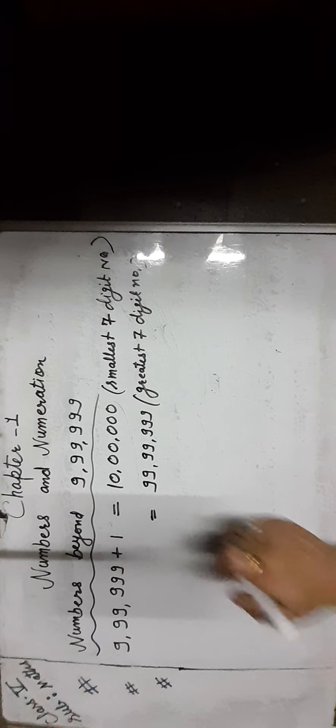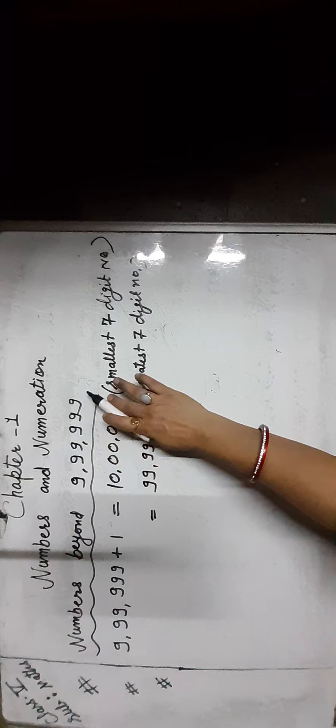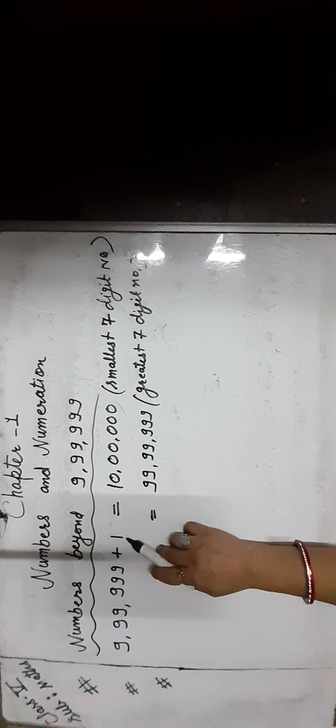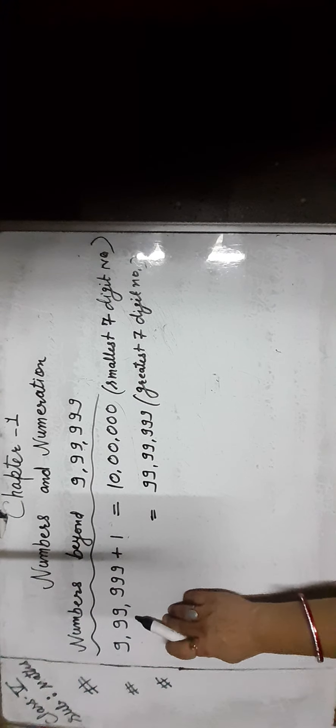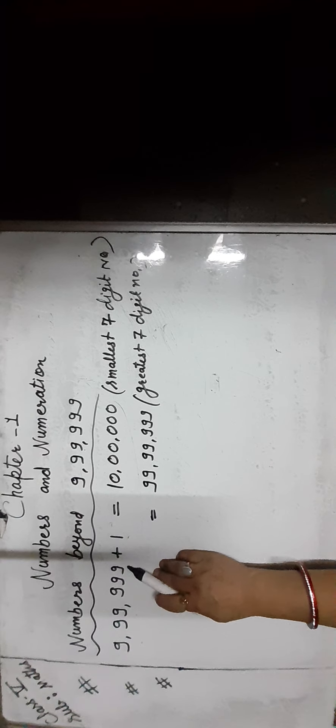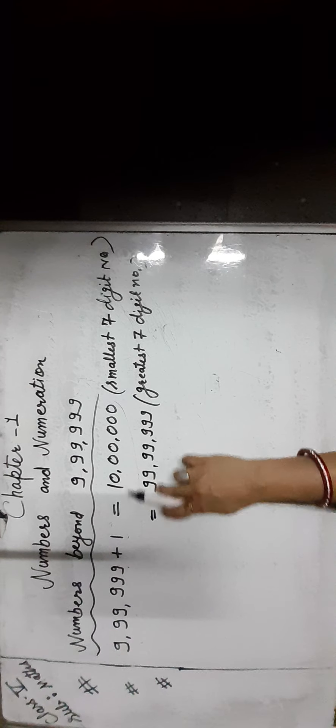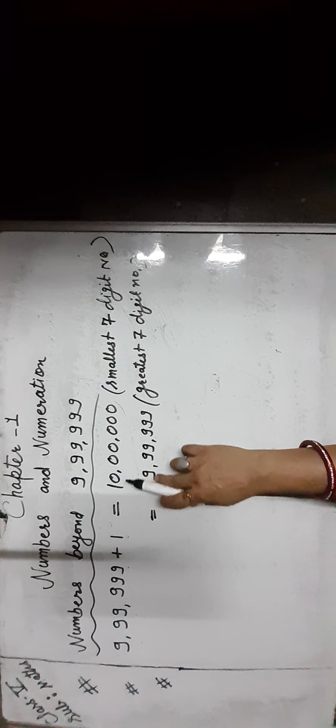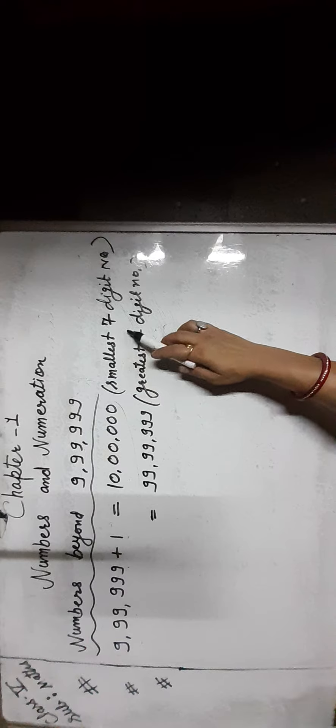Hello everyone, this is the math class for standard fifth. Today we will learn numbers beyond 9,99,999. If we add 1 to 9,99,999 we get 10 lakh, and 10 lakh is the smallest 7-digit number.